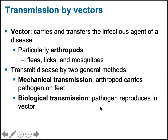You can also have vectors — animals and arthropods like fleas, ticks, and mosquitoes. These fall into two categories: mechanical, where the arthropod carries the pathogen on its feet; and biological, where the pathogen actually reproduces in the organism, which then bites you or sheds feces on you. A vector is a living organism that carries and transfers the infectious agent. The biggest group of vectors are arthropods.